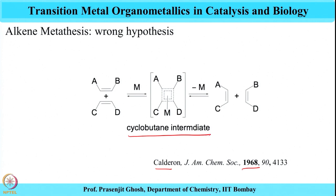However, this pathway was deemed not true because there was no evidence of formation of any kind of cyclobutane during the olefin metathesis reaction as suggested in the mechanism. What it says is that two different olefins A and B react in the presence of metal M to give a metallocyclobutane coordinated to M, and then the metathesis reaction happens, finally releasing M to give the cross metathesis product. However, this mechanism was not found to be true.